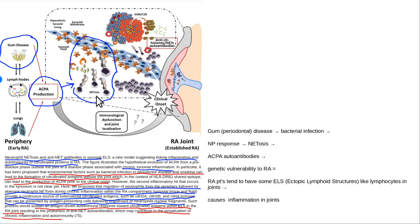Dr. McDougall lectured about leaky gut and its association with rheumatoid arthritis, and what I'm saying is you can get essentially the equivalent effect from leaky gums. Poor gum health — periodontal disease — is a way for bacteria or their toxins to enter the bloodstream, activate the immune system, and trigger these side effects of an immune response.